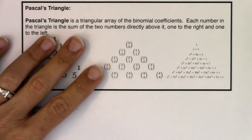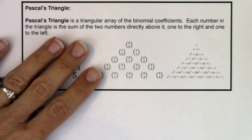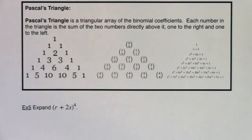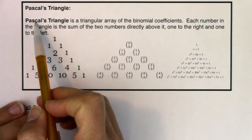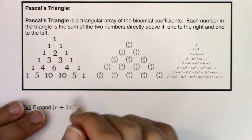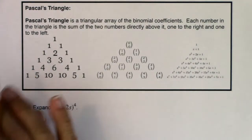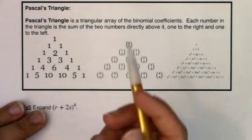Pascal's triangle is an array of the binomial coefficients. Each number in the triangle is the sum of the two numbers directly above it, one to the right and one to the left. It's a cool number pattern named after the French mathematician Blaise Pascal. Unfortunately, he gets the credit for it because there were many mathematicians who figured it out well before he did — Al Karaji, a Persian mathematician in the late 900s to early 1000s, and Yang Hui, a Chinese mathematician in the 13th century.